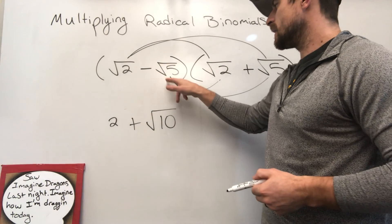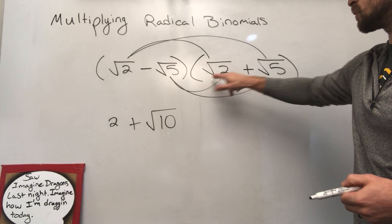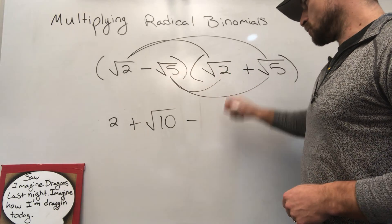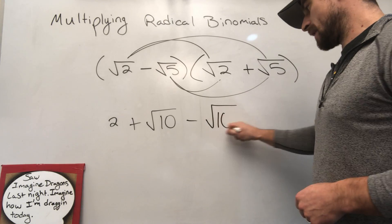Now we're going to do negative square root of 5 times the square root of 2. A negative times a positive makes a negative. 5 times 2 is 10, so we're going to put 10 inside of the radical.